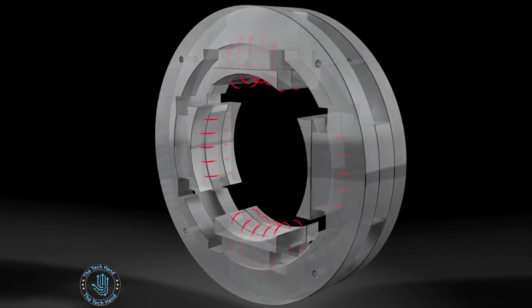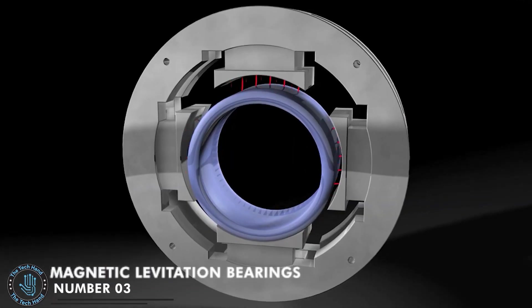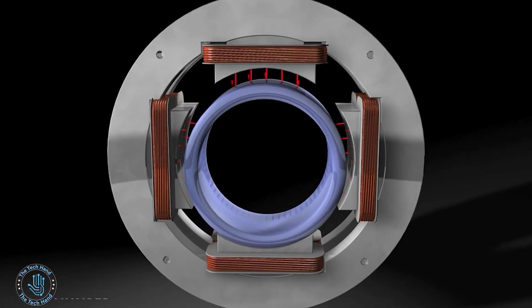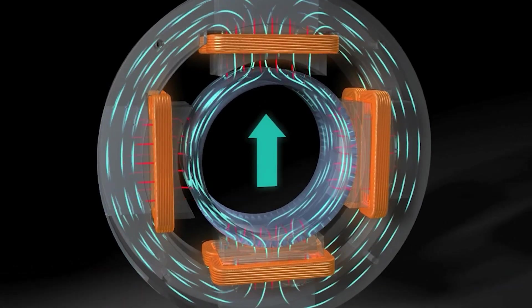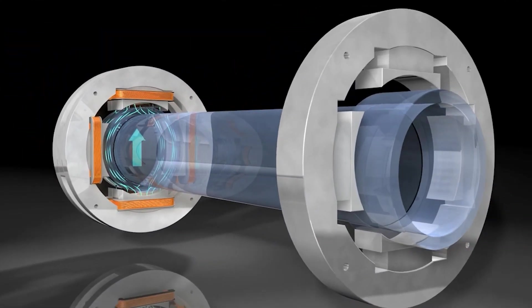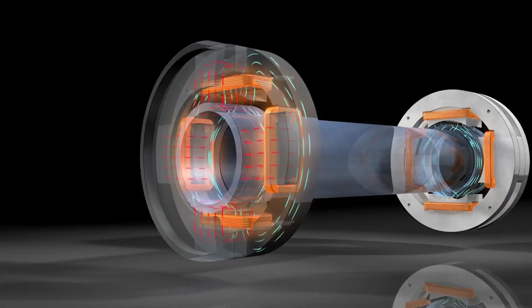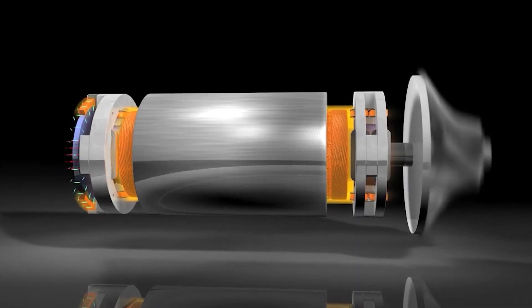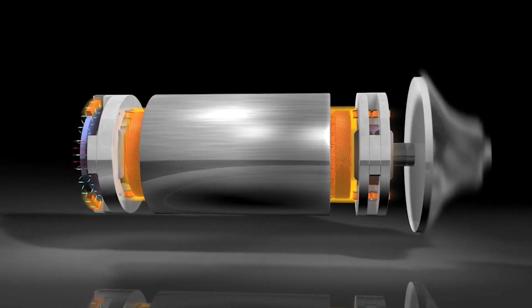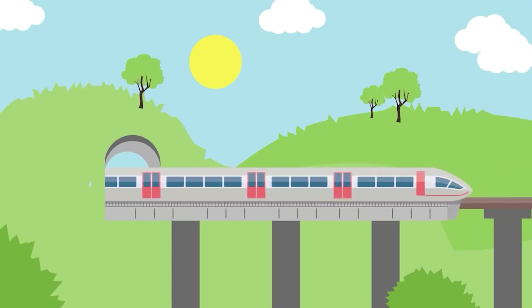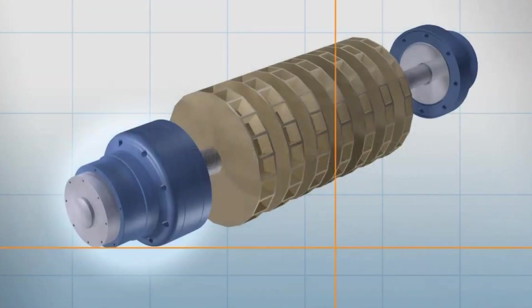Number 3: Magnetic Levitation Bearings. Magnetic levitation bearings, also known as magnetic bearings, are devices that use magnetic forces to support and stabilize an object in a stationary position without any physical contact. These bearings can be used in a variety of applications, including in transportation systems like maglev trains, as well as in industrial and medical equipment.